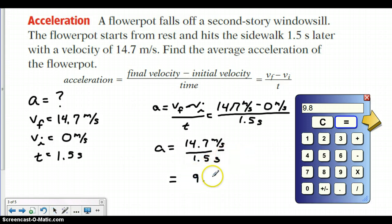So we get 9.8. And now we go meters per second squared because you have seconds times seconds. So our acceleration is 9.8 meters per second squared. That's how you would do that problem.